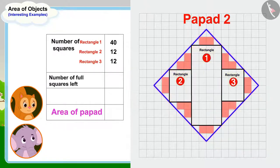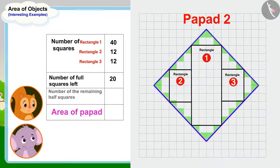Now, Chanda wrote the number of the remaining full squares, 20. And then she wrote the number of the remaining half squares, 28 or 14 full squares. In the end, Chanda used addition in this way and wrote down the total number of squares covered by this papar, 98.